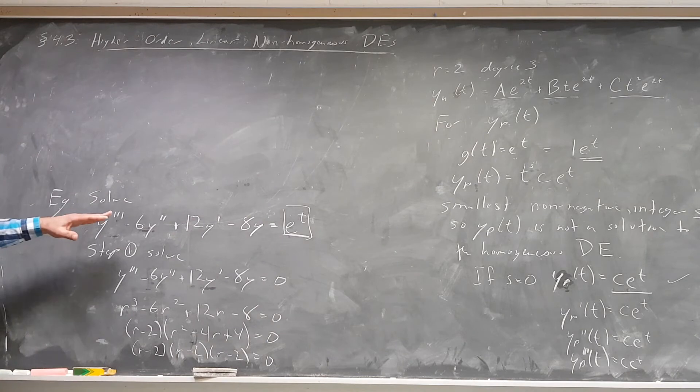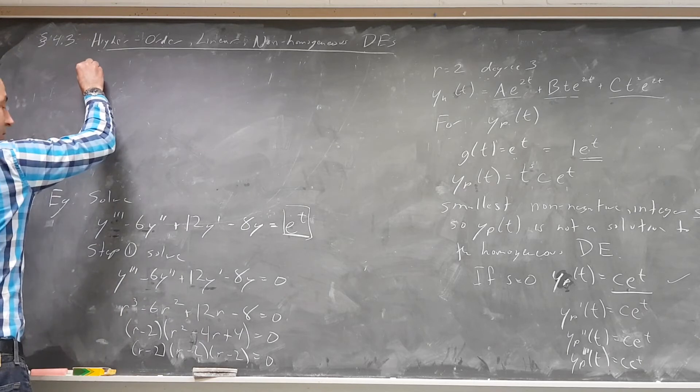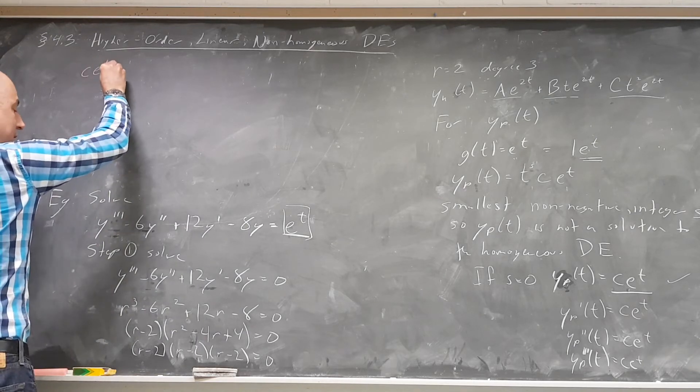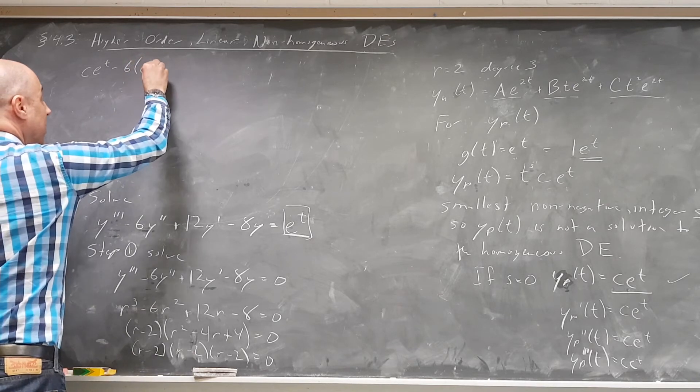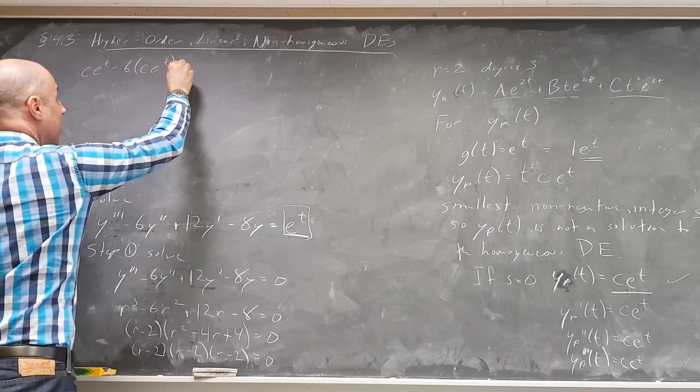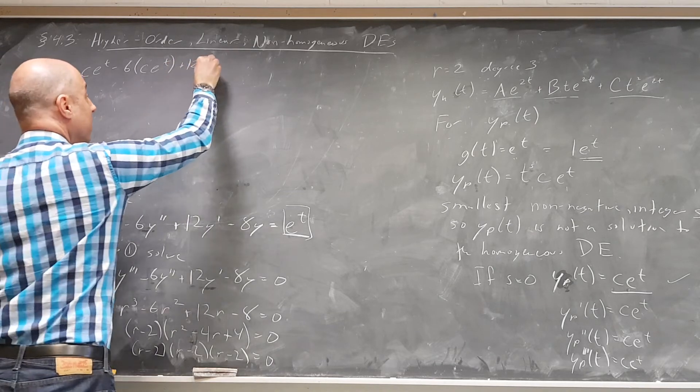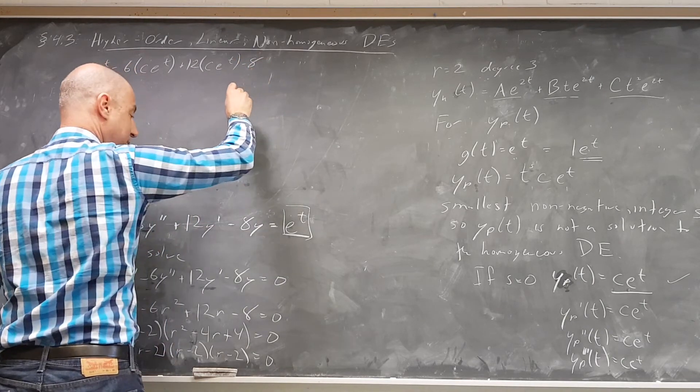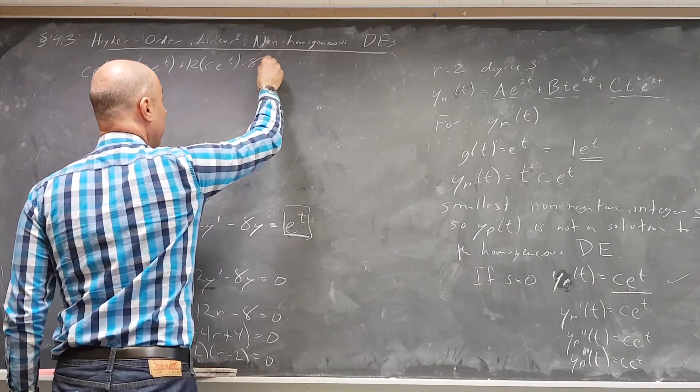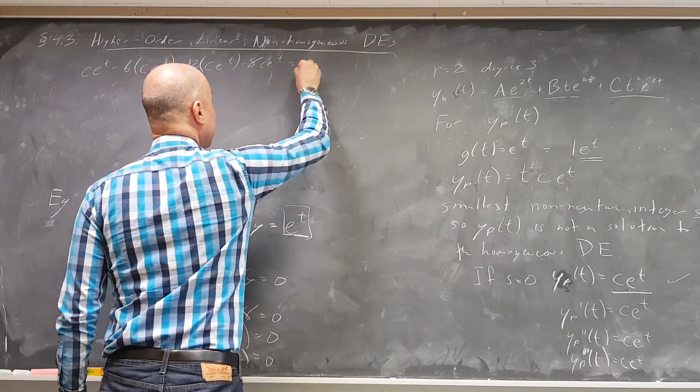Let's go ahead and plug that in to the original differential equation. So y triple prime is c e to the t minus 6 times y double prime minus 6 times c e to the t plus 12 times y prime, c e to the t minus 8 times y, which is c e to the t. And it's supposed to equal e to the t.